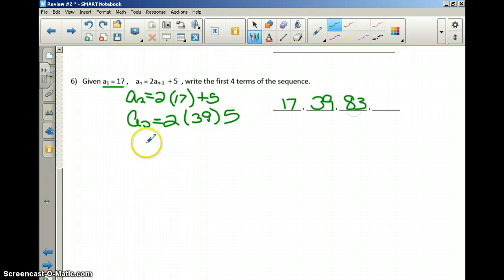Finally, they want the fourth term. So a_4. Again, we're going to recycle. It's recursive. I'm going to put the 83 in. Always use the number that came before in the sequence. And then I'm going to add 5 onto that. And my answer for the fourth term would be 171.